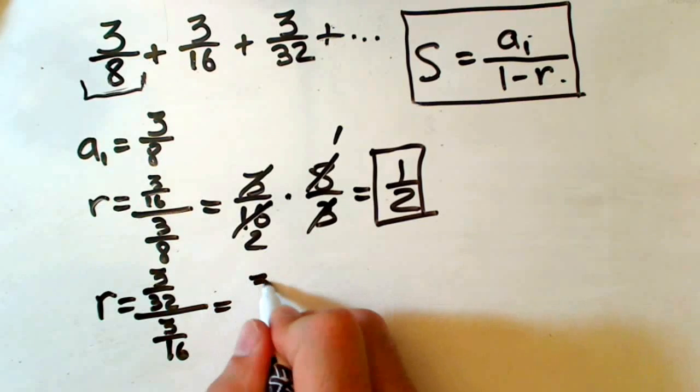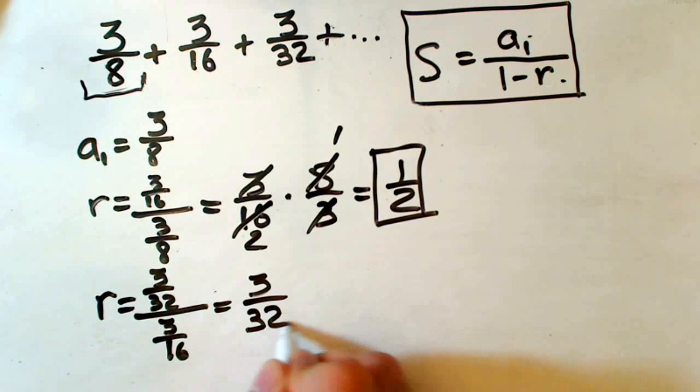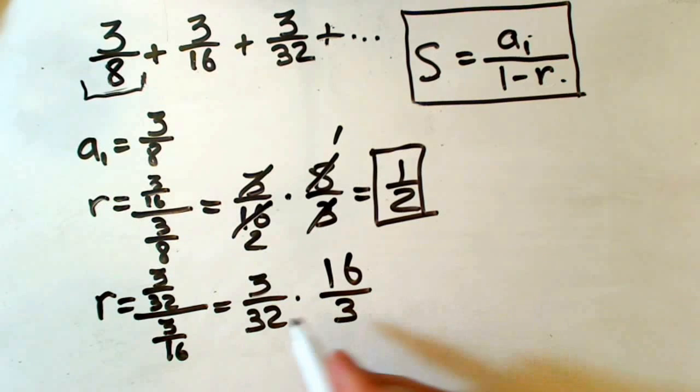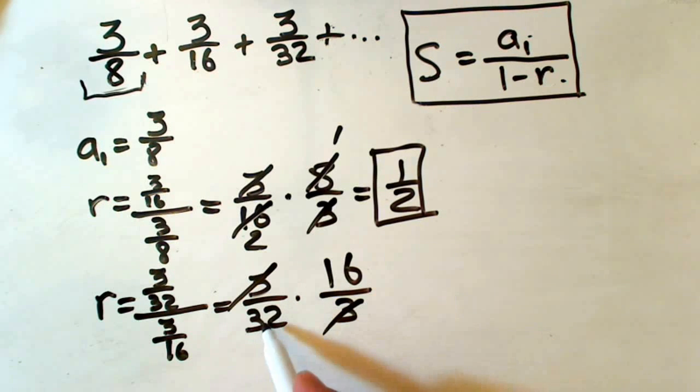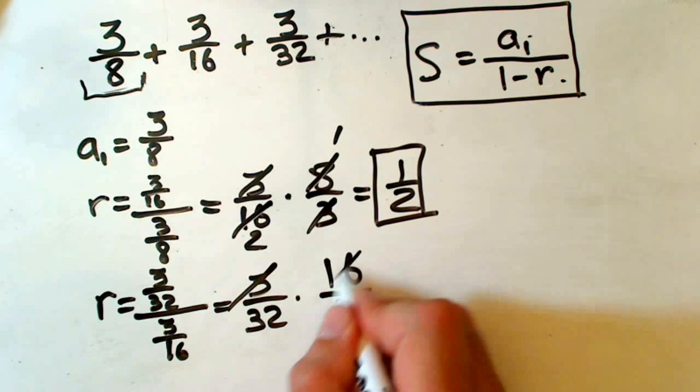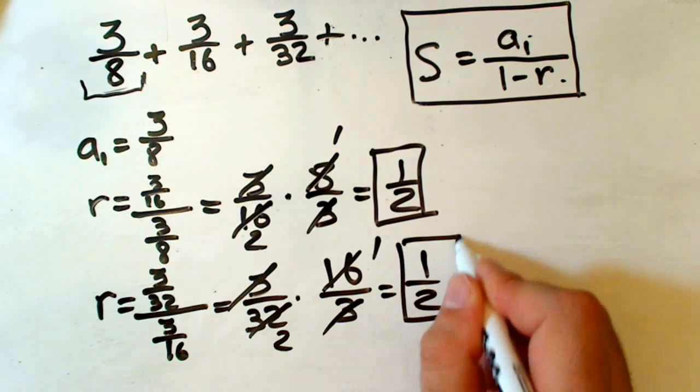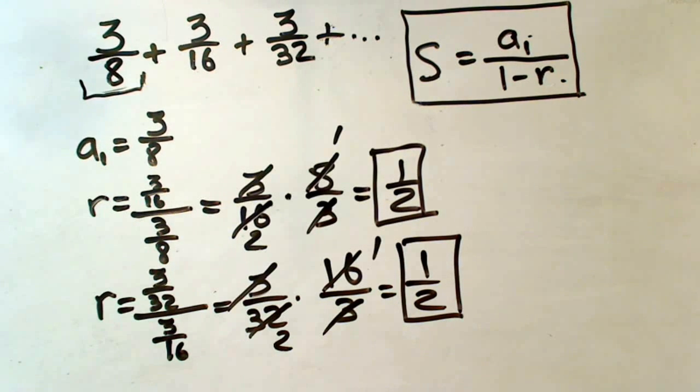To do this, we multiply by the reciprocal, which is 16 over 3. Again, 3 cancels. 32 divided by 16 is 2, so 1 half. See? That means we have our ratio.